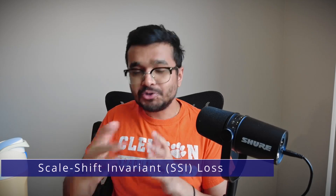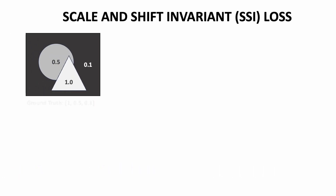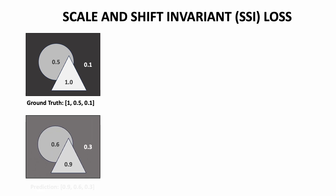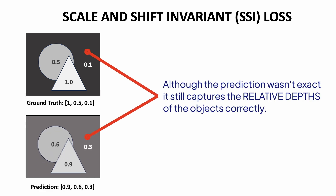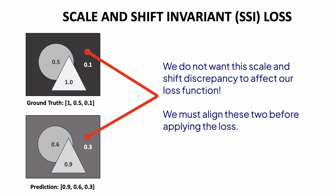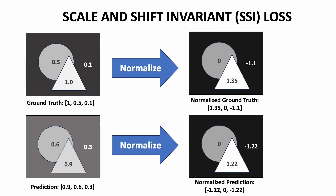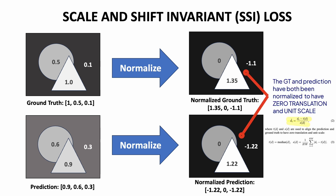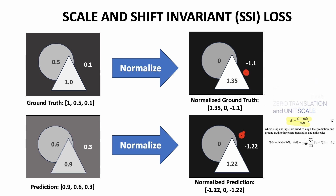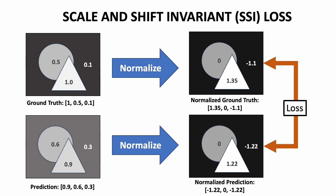For example, if ground-truth depth values of 3 pixels are 1, 5, and 0.1, while the network predicts 0.9, 0.6, and 0.3, the relationship between predicted and ground-truth depths is quite similar — they differ only by a multiplicative and additive factor. We don't want scale and shift to affect the loss, so we first align the two maps before applying the mean square error loss. The MIDAS paper proposes normalizing the ground-truth and predicted depths to have zero translation and unit scale, calculating the median and deviation of these maps and scaling them accordingly before applying the MSE loss.